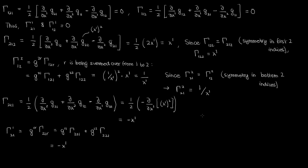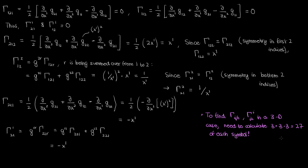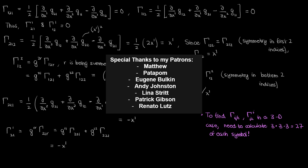So there you have it — you've successfully calculated all eight Christ-awful symbols of the first kind and all eight of the second kind for the metric tensor in polar coordinates. If you repeated this for three-dimensional spherical coordinates, you'd have 3×3×3 = 27 of each kind, so 54 total — which would take an entire video. But textbook problems do expect you to know how, so make sure to practice. The next video will cover the transformation rules for Christ-awful symbols, which you'll see are not tensors because they don't follow tensor transformation laws. Thanks for watching — this is the Faculty of Khan, signing out.